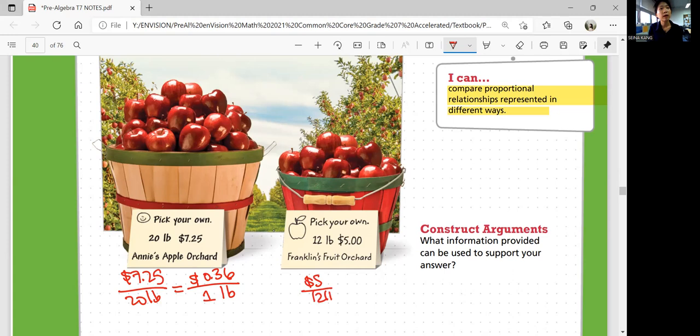$5 per 12 pounds. So that means 5 divided by 12 is 0.41666 repeated. So that could be about 0.42. So whose apple is more expensive to pick per pound? Franklin's. Franklin's apple is more expensive.